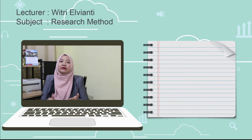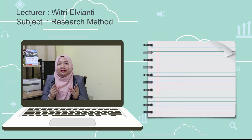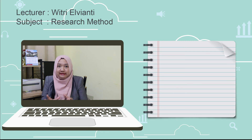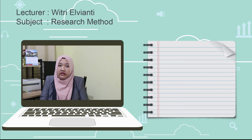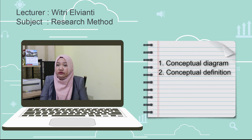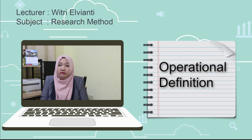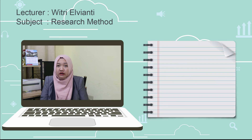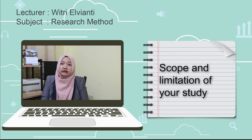Now it is your turn to practice your skills and understanding by establishing an operationalization and conceptualization of your independent and dependent variables in your research proposal draft. In the structure of explanation, the first thing to explain is the conceptual diagram, and the second is the conceptual definition, which should include information on both the independent variable and the dependent variable. Then, the next part covers the operational definition for both independent and dependent variables. After that, you discuss the relationship between the independent and dependent variables, and finally you need to emphasize the scope and limitation of your study.